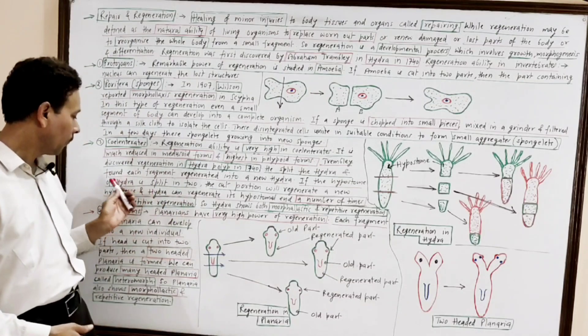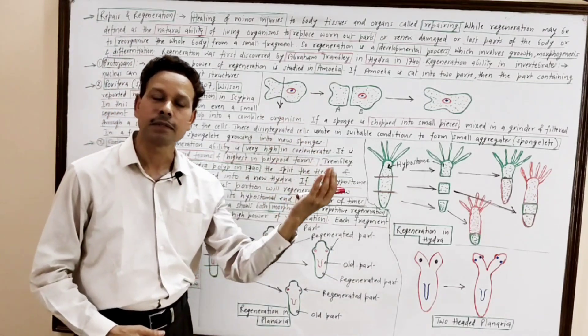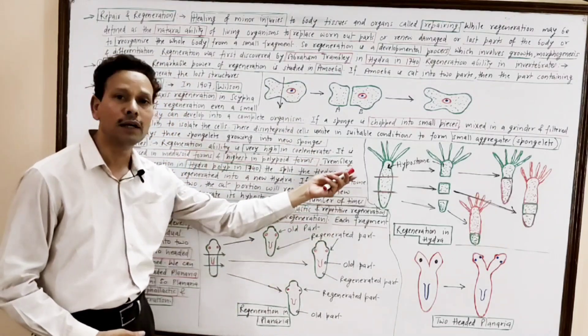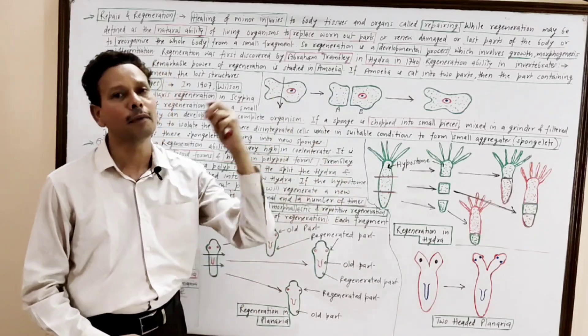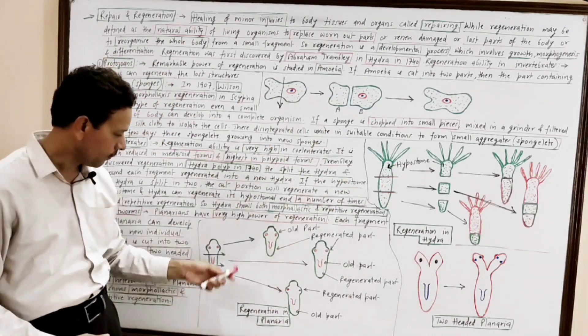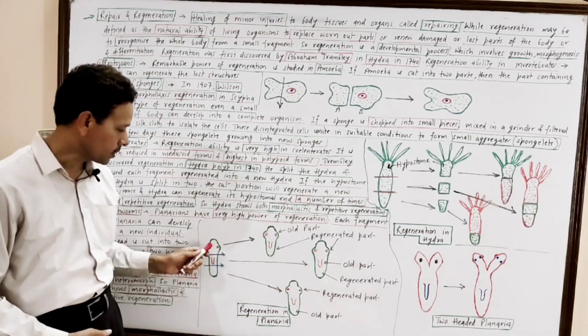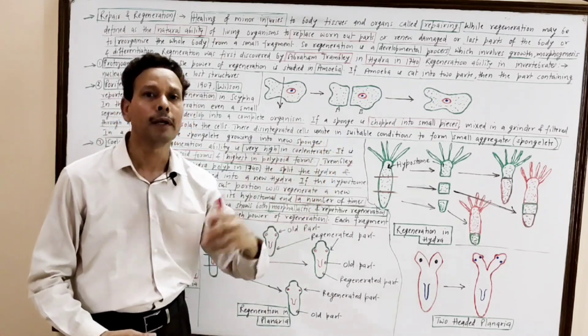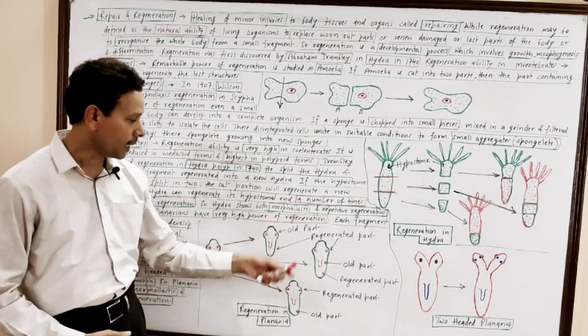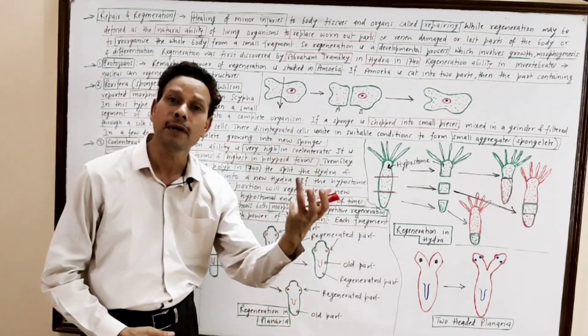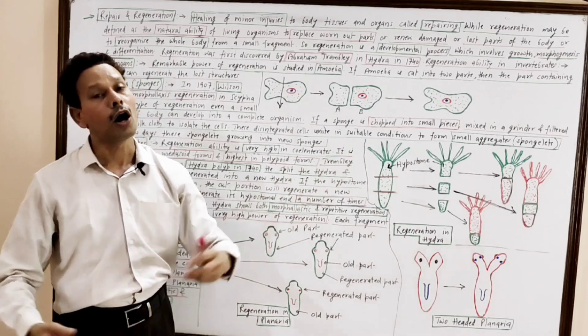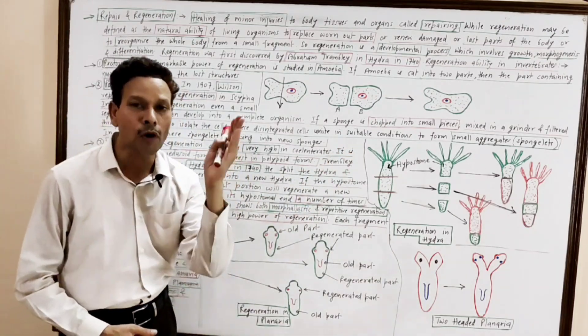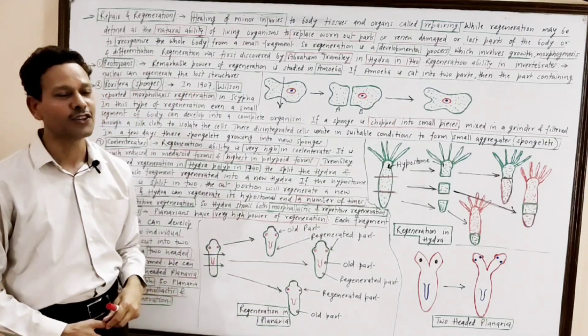In flatworms, platyhelminthes, planarians, dugesia, again, like hydra, these organisms also show remarkable power of regeneration. If a planarian is cut into three parts, each part is capable to give rise a new planarian. That kind of regeneration in which a simple fragment gives rise whole organism, that is morpholaxis or it is morpholactic regeneration.